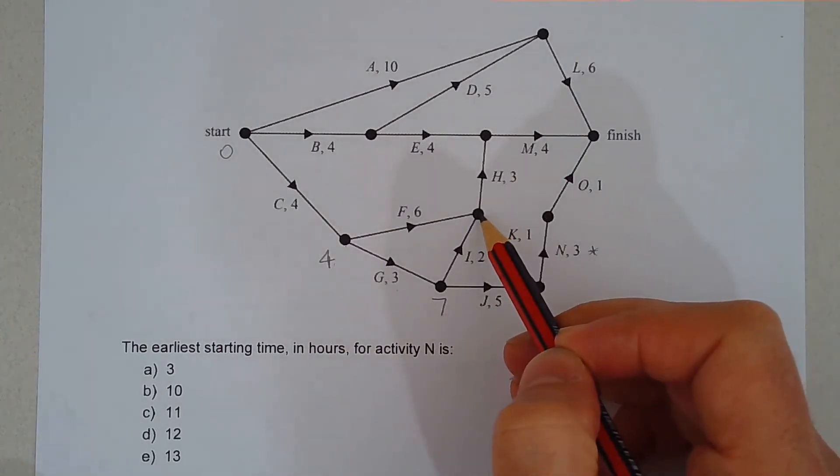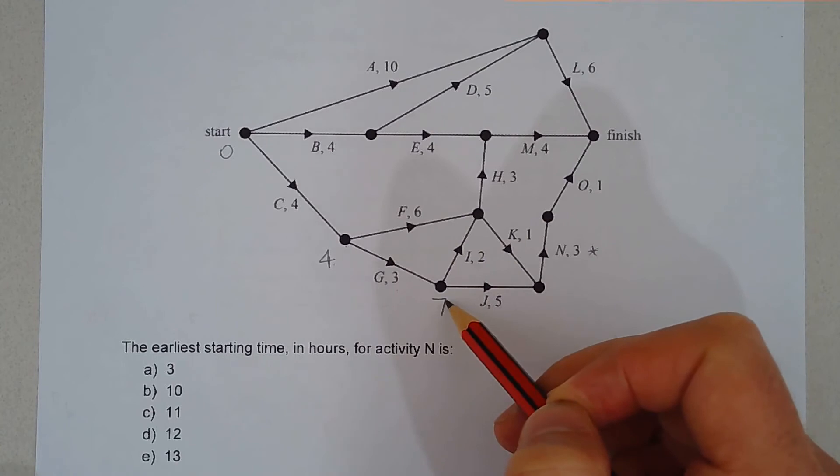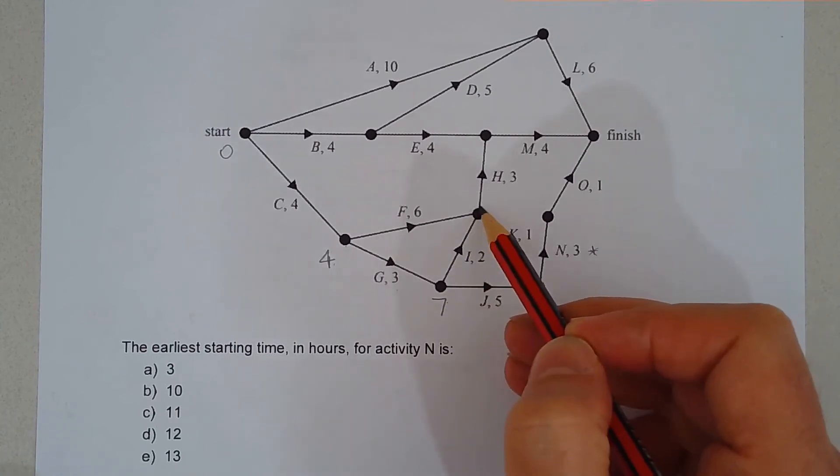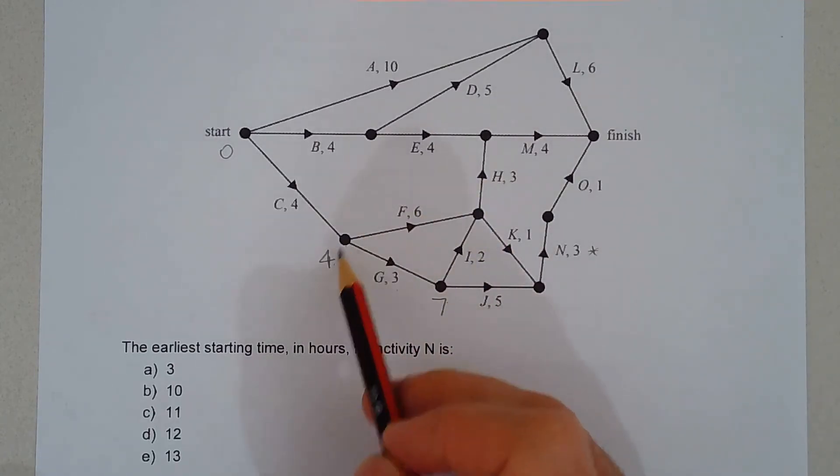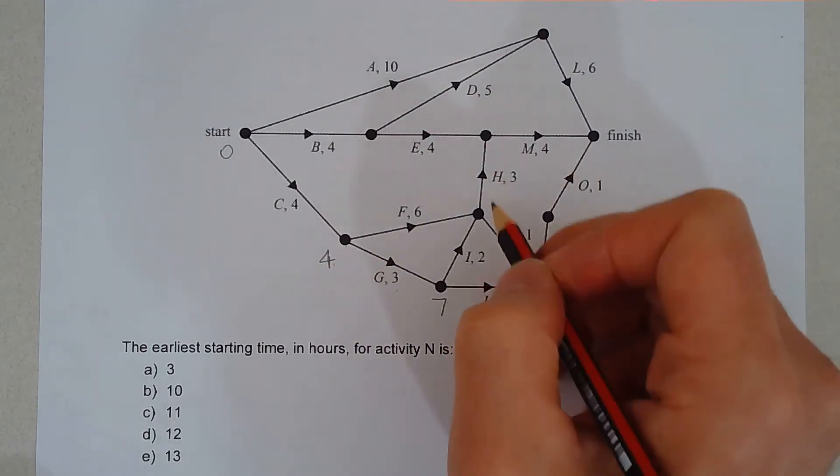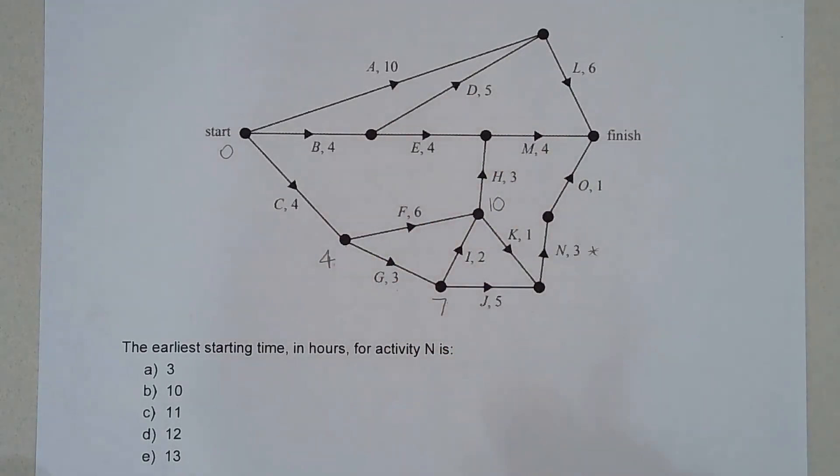This vertex here, there's two ways to get to this vertex, either from the seven hour mark, seven plus two gives us nine, or from this vertex here which is at the four hour mark, four plus six is ten. So we'll put the larger of the two numbers.